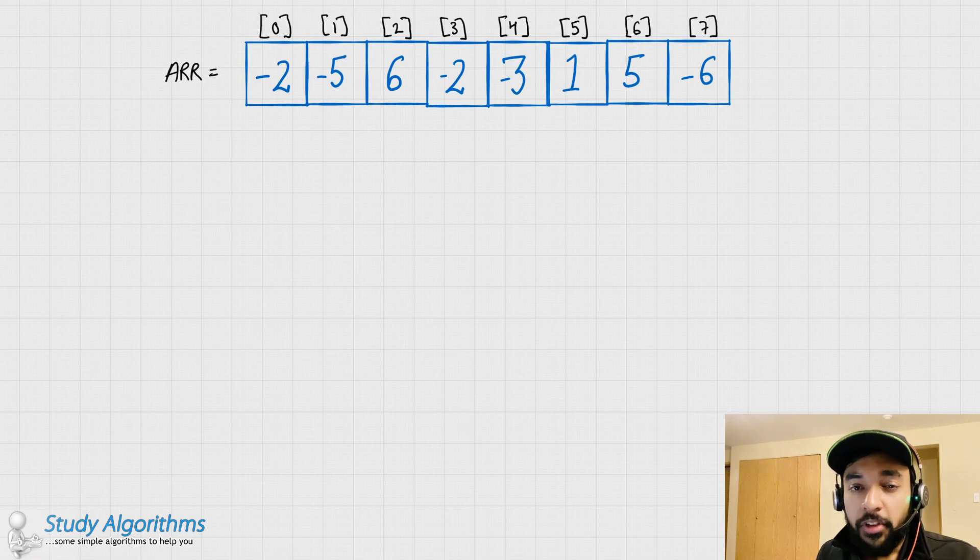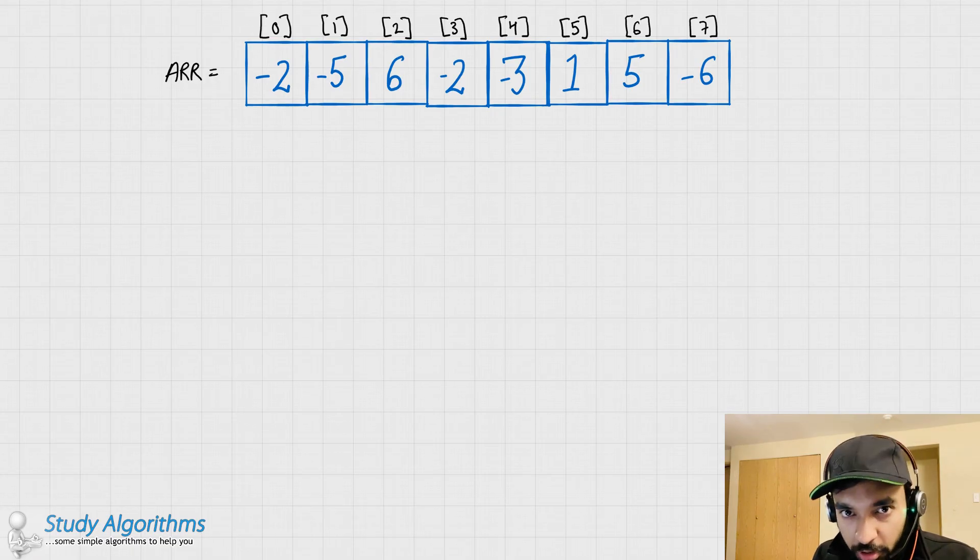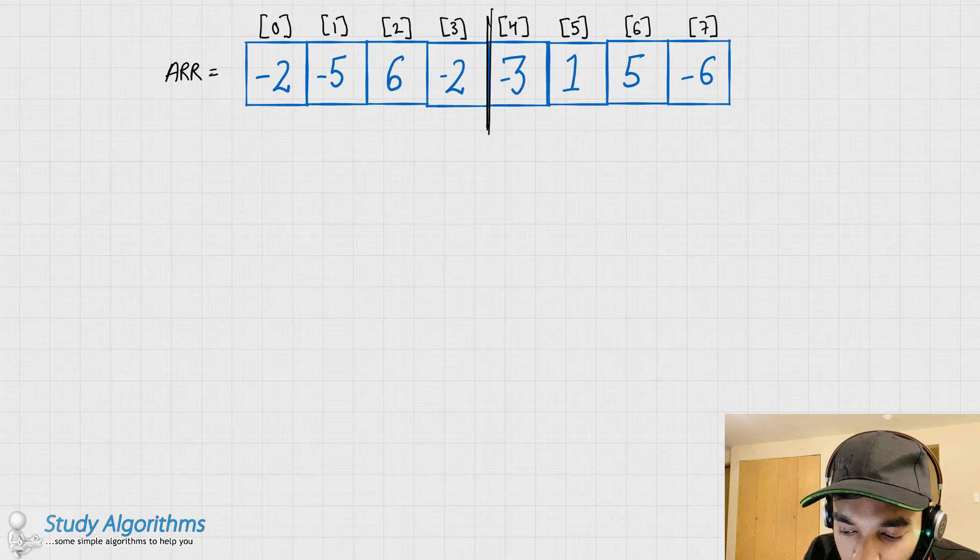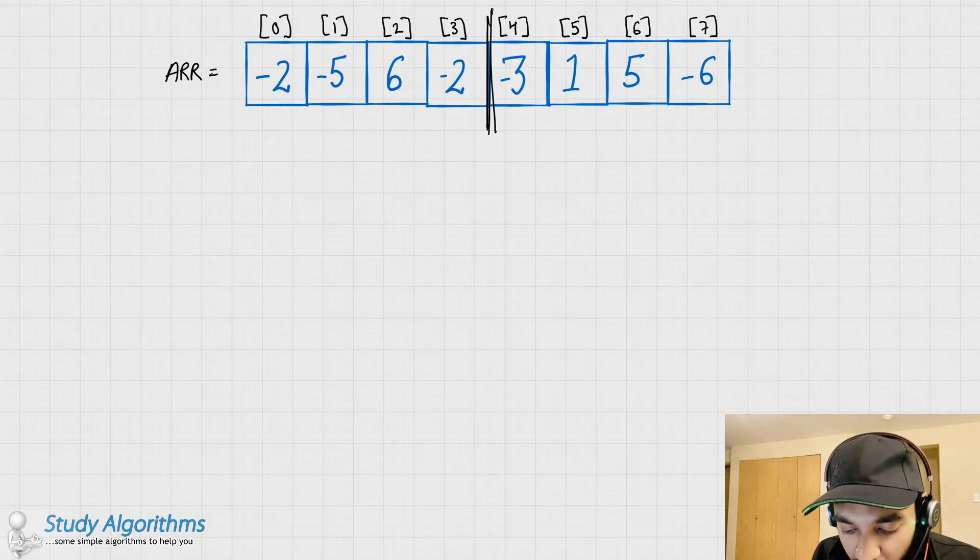To optimize this problem, we need to think a little differently. Instead of going forward, what if we go backwards and try to come up with a solution? So, I would just try to look at element number 3 and then try to form all the possible contiguous subarrays in the backward direction. So, let me just try to create all of these arrays.